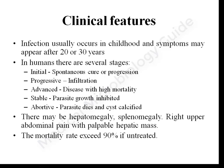A patient presents with abdominal distension, right upper abdominal pain, and a palpable mass. On examination there may be hepatomegaly or splenomegaly. The mortality rate exceeds 90% if the patient is not treated.